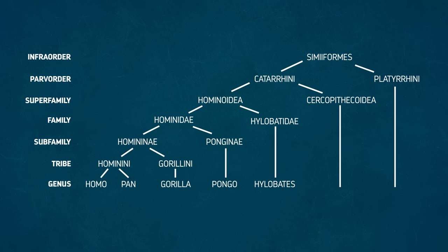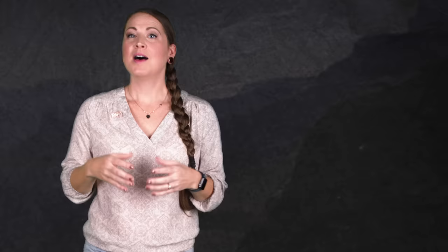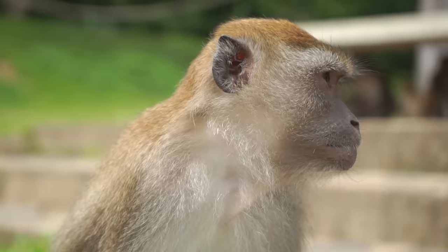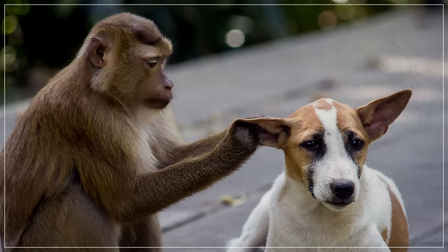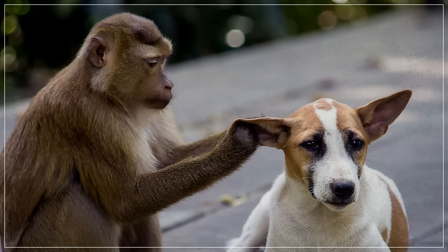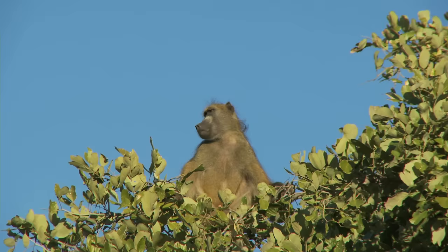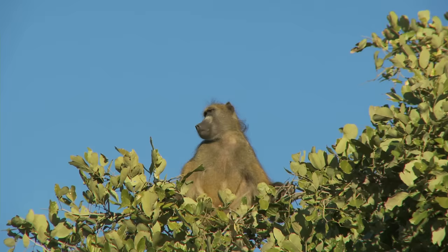But members of the next rank will probably look familiar. That rank is infraorder, and the one we belong to is simiiformes, which includes both monkeys and apes. Among the monkeys, you have your New World monkeys and your Old World monkeys. Both have eye sockets that are completely enclosed by bone. And they also have dry noses, meaning that they lack a rhinarium, the wet part of the snout in some animals, like dogs, that gives them increased smelling abilities. And since we share a more recent common ancestor with Old World monkeys, our nostrils open downward, like theirs do. But in New World monkeys, they open sideways.